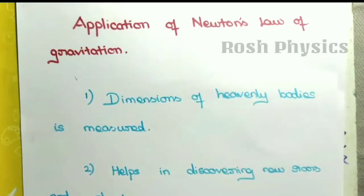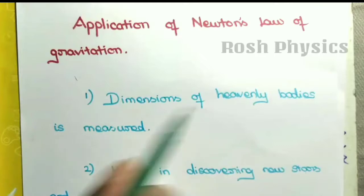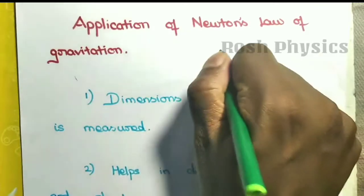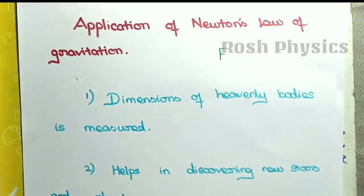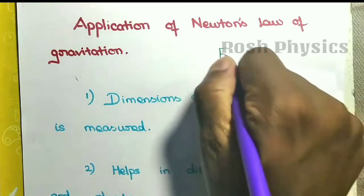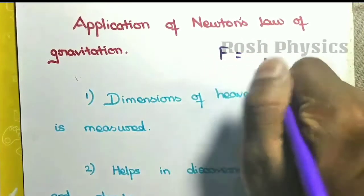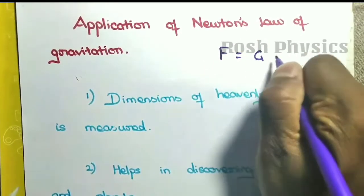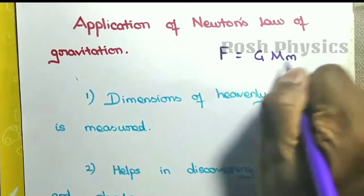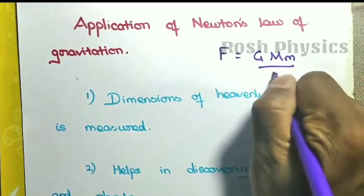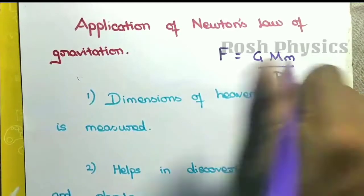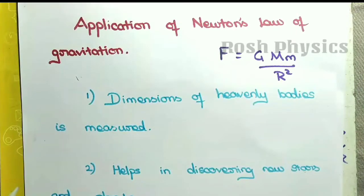So, the applications of Newton's law of gravitation — what is it used for? We all know that F is equal to G times M times m divided by r squared. This is the formula.